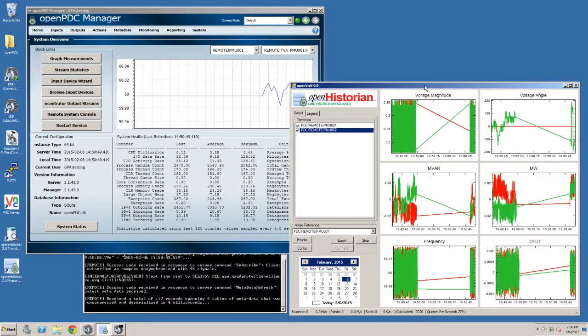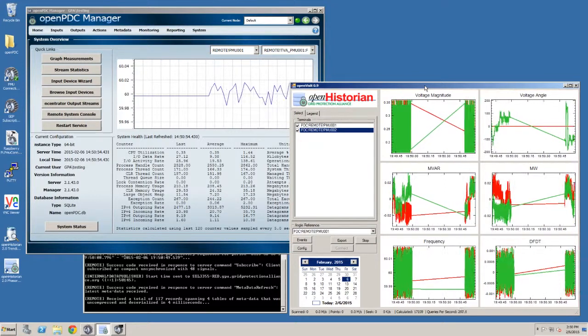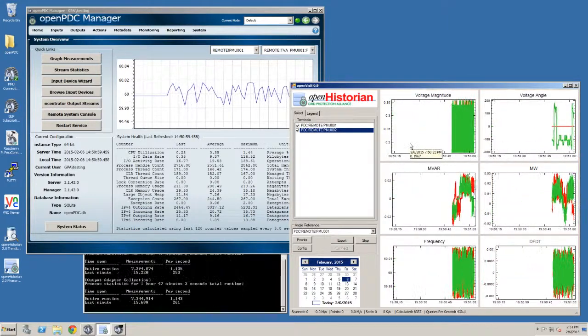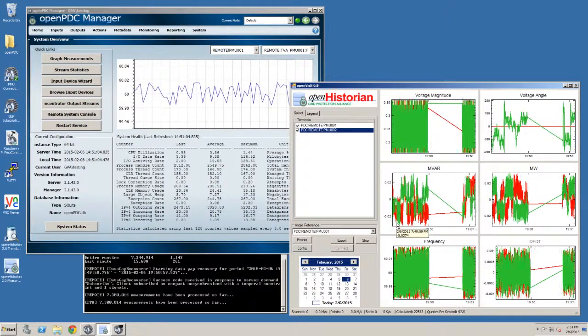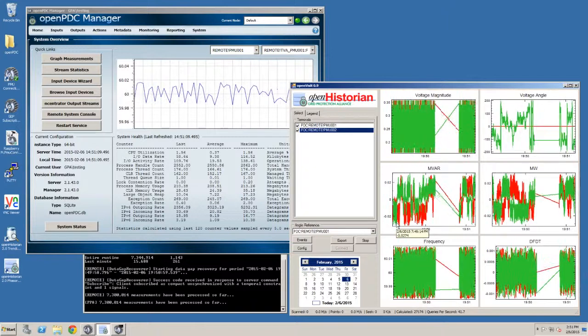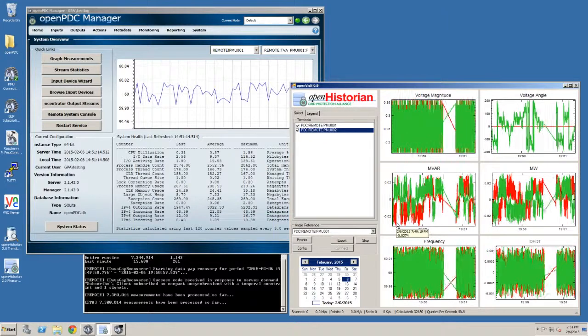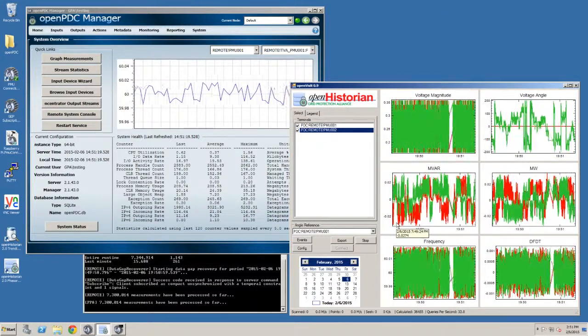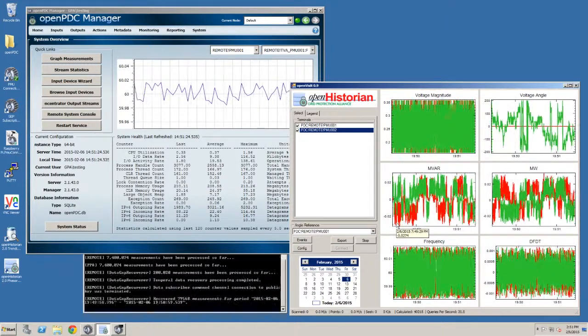Now it knows how large of a gap there was to fill for the history. And it's going to have to go back and request it. There it goes. It's requesting the missing data from the SBG and filling in the gap. So simultaneously while still getting real time data, it's going back and pulling back the histories to make sure that the archive data is full and it's at its full fidelity. Ta-da! It's all working.